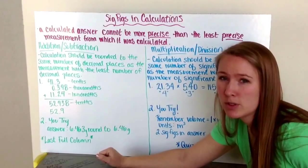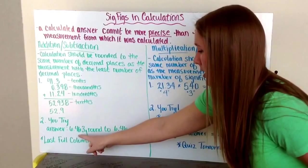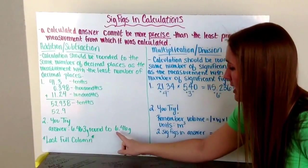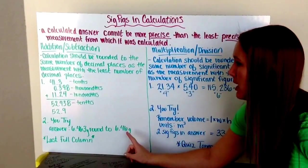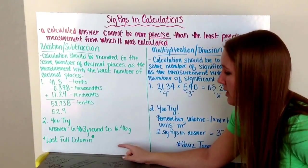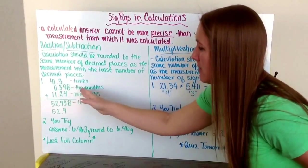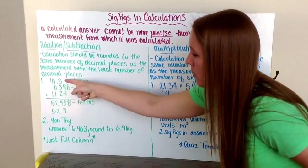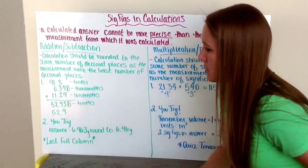Go ahead and try number 2, adding the three candy bar measurements together. You should get an answer of 6.463, and you want to round that to 6.46 grams because the lowest precise measurement with the least number of decimal places is to the hundredths place. Another way you can think about addition and subtraction is you round to the last full column. My last rightmost full column here is my tenths column. So I round my answer to the hundredths place.